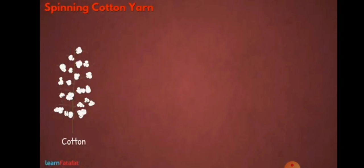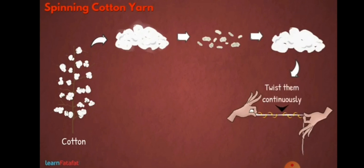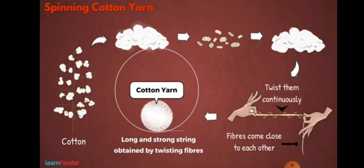You can do it at your home as well. Here is a method. Take some cotton and remove seeds from it. With one hand, pull some fibers from the cotton and twist them continuously. By doing so, fibers come close to each other. They hold each other tightly, and we get a long string. The long and strong string obtained by twisting fibers together is cotton yarn.